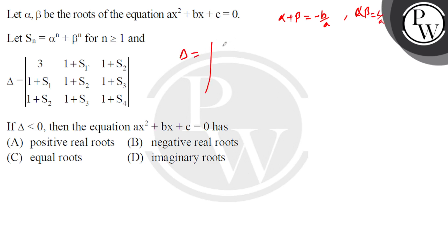We have the determinant with first row: 3, 1+S₁, 1+S₂. So S₁ = α + β, and 1 + S₂ = 1 + α² + β².